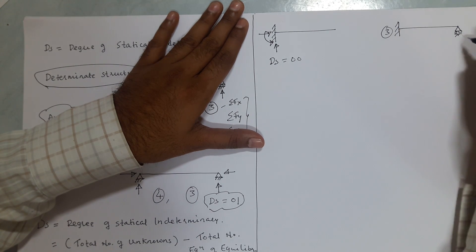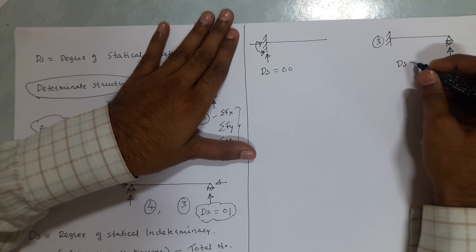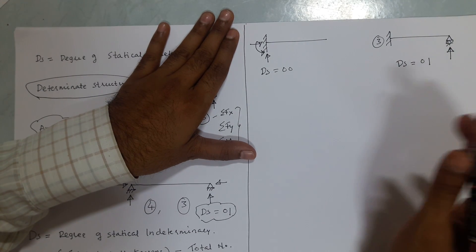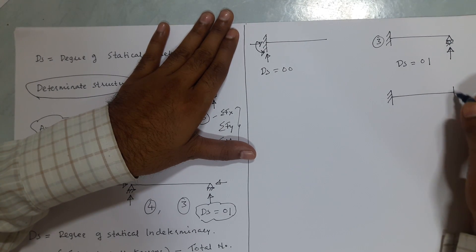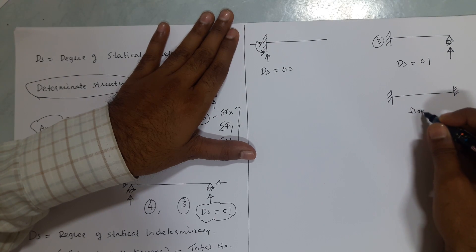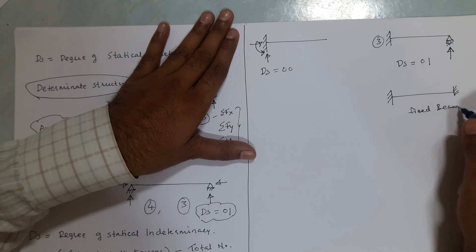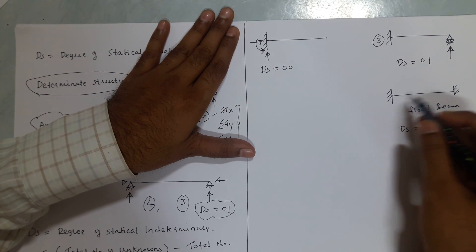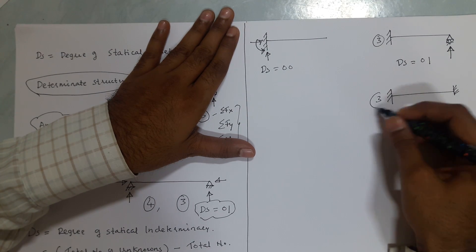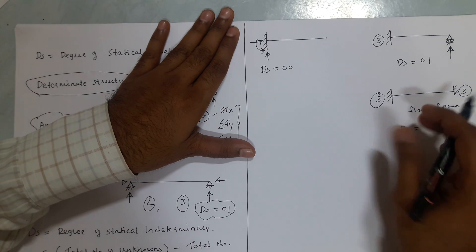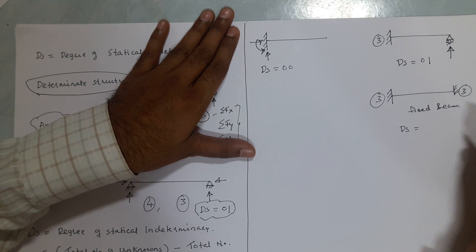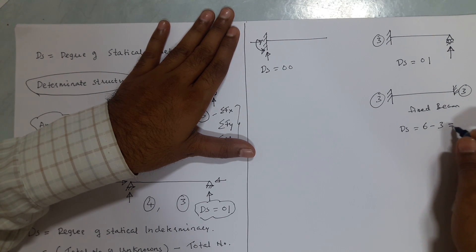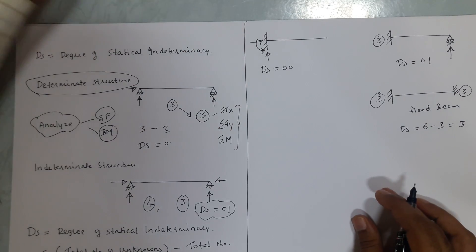For a cantilever beam with an additional roller support, there are three unknowns at the fixed support plus one unknown at the roller, giving four unknowns, so DS equals one. For a fixed beam with fixed supports at both ends, we have three reactions at each end — six unknowns total — minus three equations of equilibrium, so DS equals three.